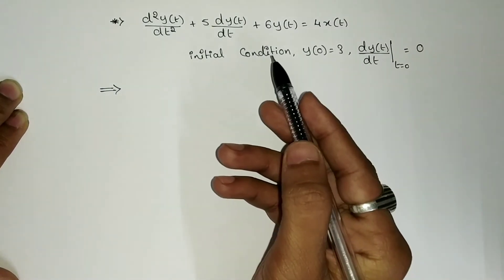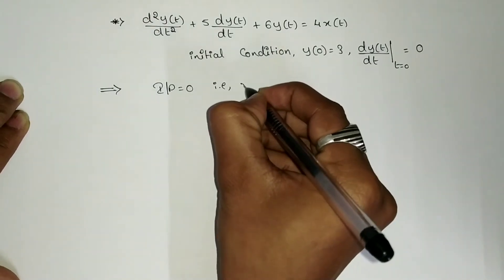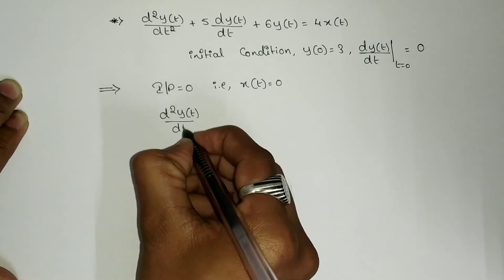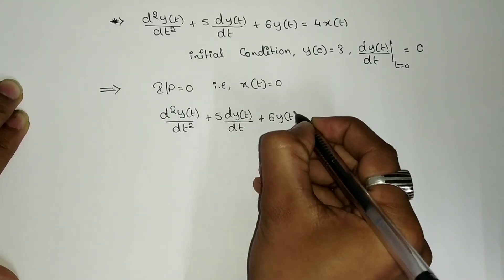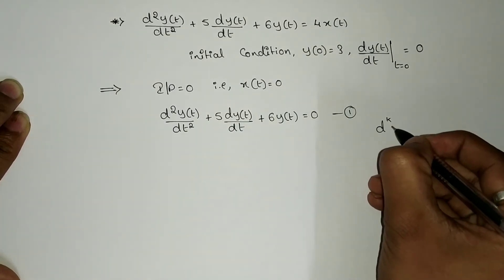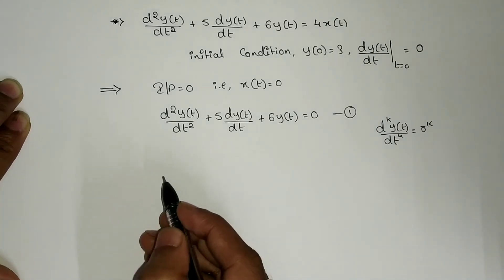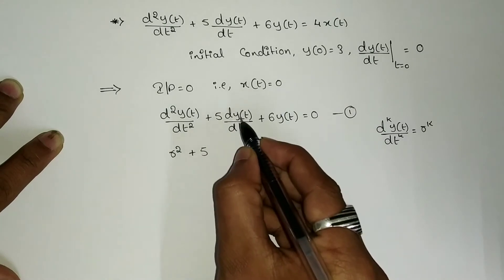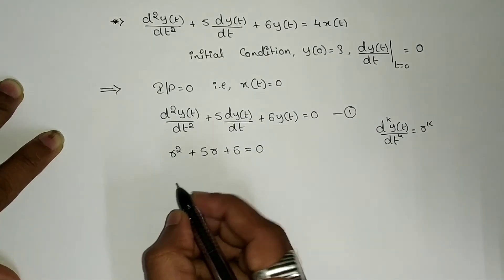To find the natural response we use the homogeneous equation by substituting x(t) = 0, giving: d²y(t)/dt² + 5 dy(t)/dt + 6 y(t) = 0, marking it as equation number 1. Substituting d^k y(t)/dt^k by r^k, we get: r² + 5r + 6 = 0.